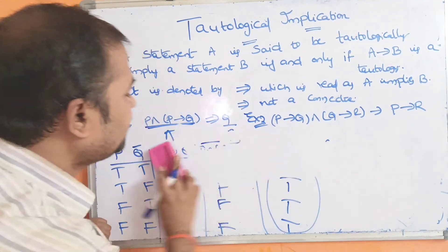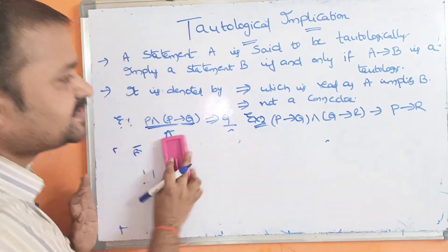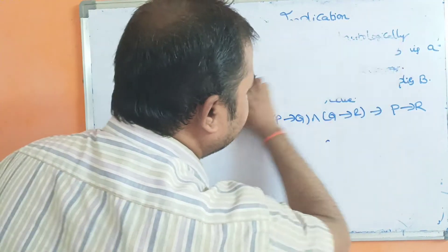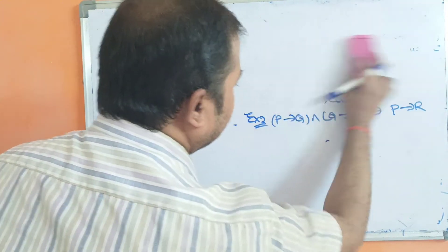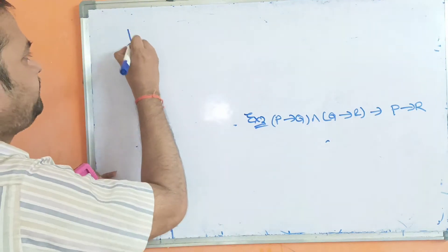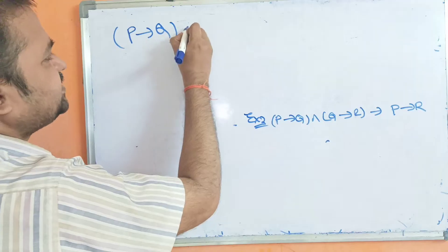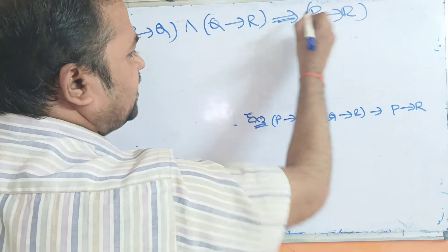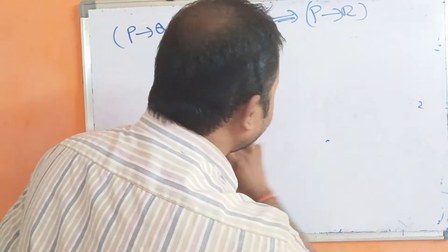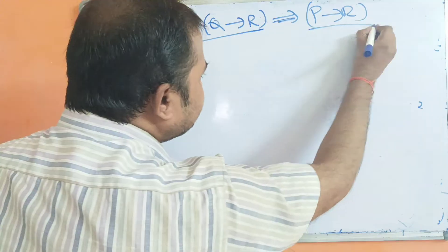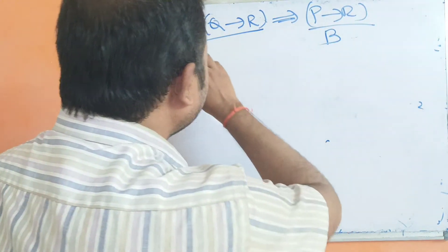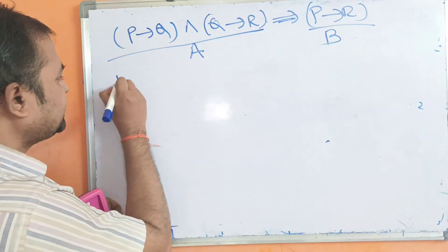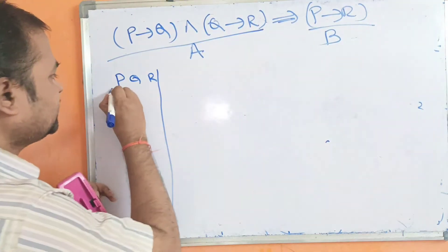Now let us solve one more example: (P→Q) ∧ (Q→R) ⟹ (P→R). Here we have three propositions P, Q, R, so we will get 2³ = 8 combinations. If A→B is a tautology, then we can say A is tautologically implied to B.